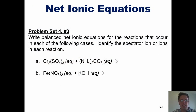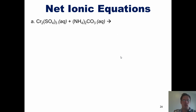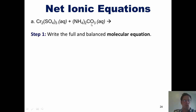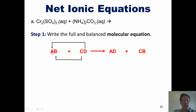I'll show you how this is done by looking at an actual problem: write balanced net ionic equations for the reactions that occur in each of the following cases, and identify the spectator ion or ions in each reaction. I'm not going to do part B, but I will do part A and let you attempt B on your own. Let's take a look at our overall equation: chromium sulfate reacting with ammonium carbonate.